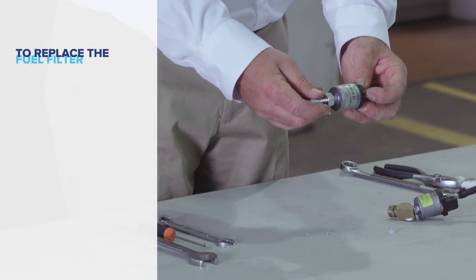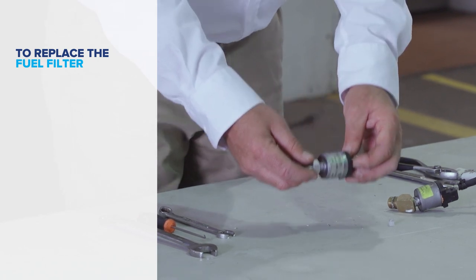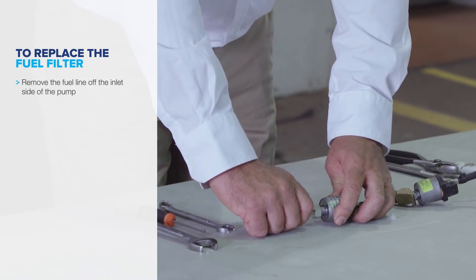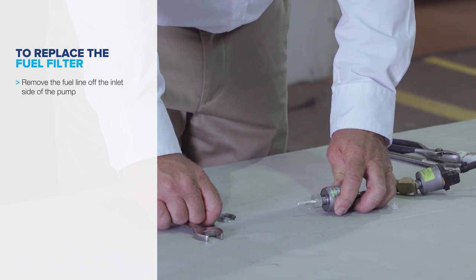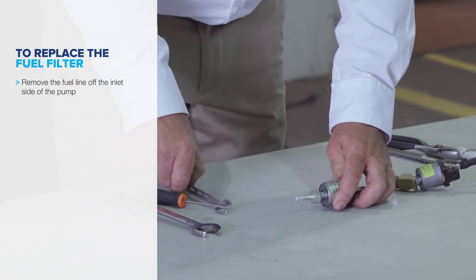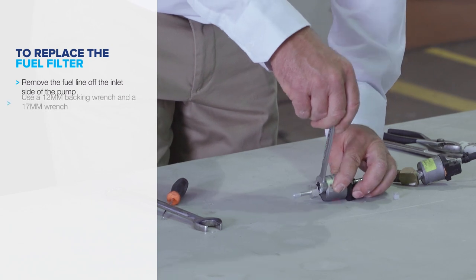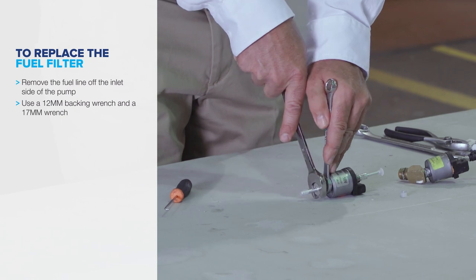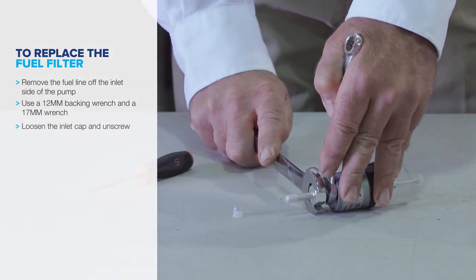If you need to replace the fuel filter, the pumps are commonly found on chassis. So what you will do is remove the fuel line off the inlet side of the pump, if this is per se an International. Once the fuel line is off the inlet side of the pump, I will take a 12 millimeter backing wrench and a 17 millimeter wrench. You will loosen the inlet cap.